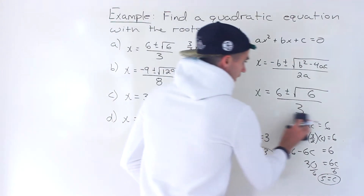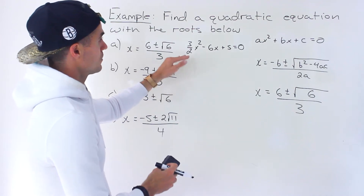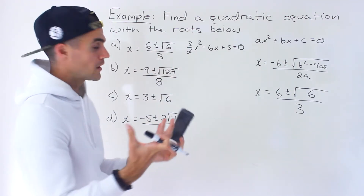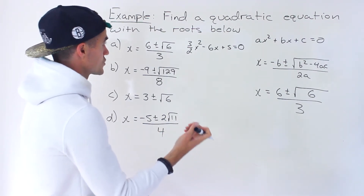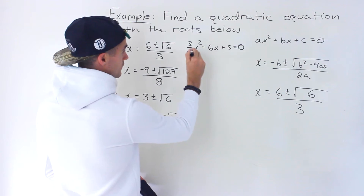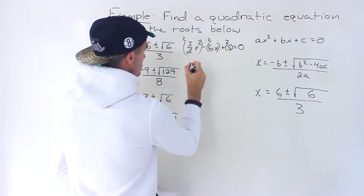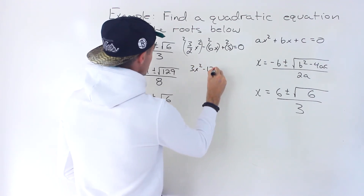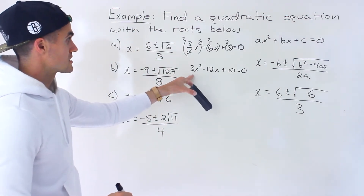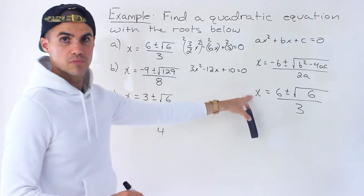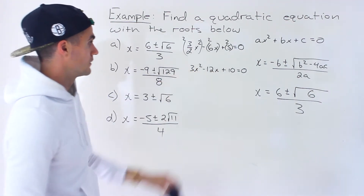Sometimes fractions aren't allowed, so you can multiply everything by the lowest common denominator — both the left side and the right side — and it's still the same equation with the same solutions. Here we have a denominator of 2, so multiplying through by 2 gives 3x² − 12x + 10 = 0. The solutions to both forms are the same; it's just that from the second form, the solutions need to be simplified a little.